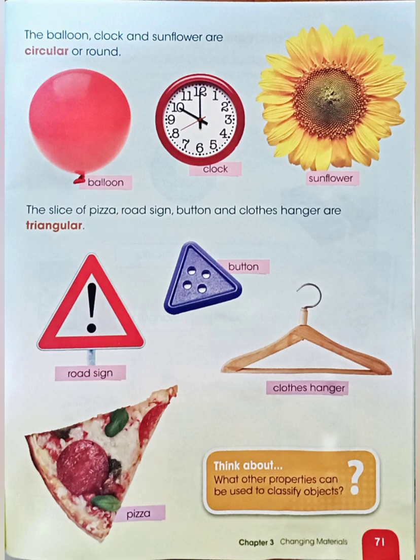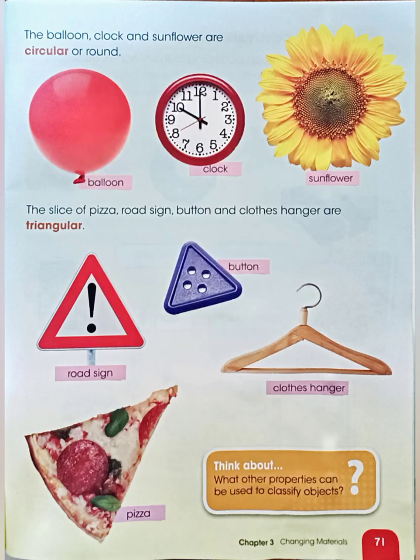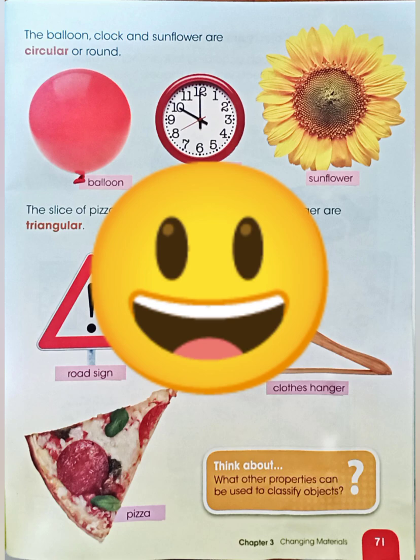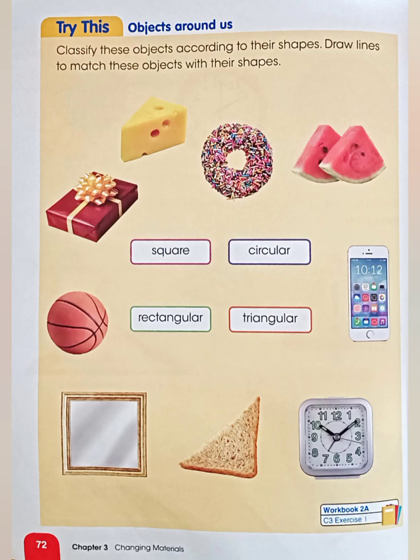So now you have already learned about the shape of objects. What do you think about objects around you? You can see objects around you — what do they look like? Square, rectangular, circular, or triangular? Now that you've learned about shapes of objects, please try to answer this worksheet, which you can find on page 72.